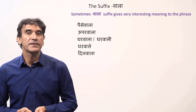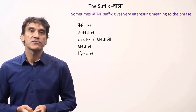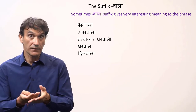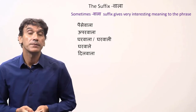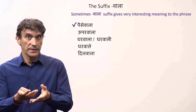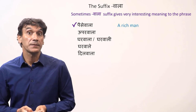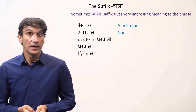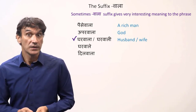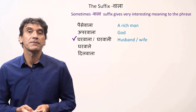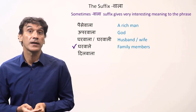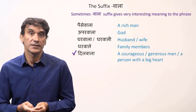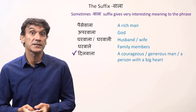Sometimes the suffix vala gives very interesting meaning to a phrase. Consider: paise wala, upar wala, ghar wala, ghar wali, ghar wale, and dil wala. Paisa means money, so paise wala means a rich man. Upar means 'up in the sky,' so upar wala means God. Ghar means house or home — ghar wala is husband, ghar wali is wife, and ghar wale means family members. Dil means heart, so dil wala means a man with a big heart — a courageous, generous man.